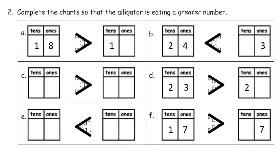Complete the chart so the alligator is eating a greater number. So alligator is eating the 18 here, so we need a number that's less than 18 on the other side. So we want it to eat maybe 16. A lot of numbers you could put there. Eight different numbers you could put there, counting zero.